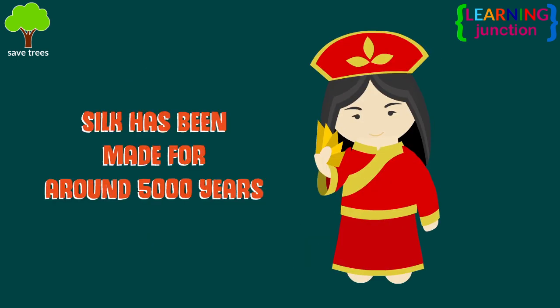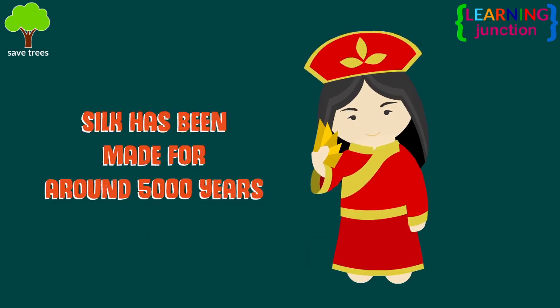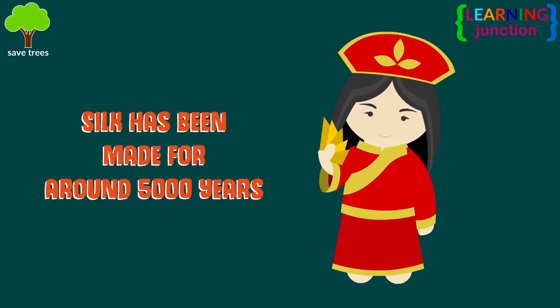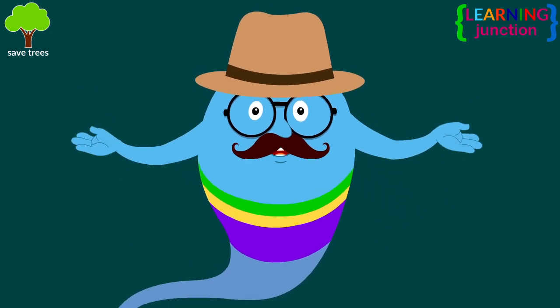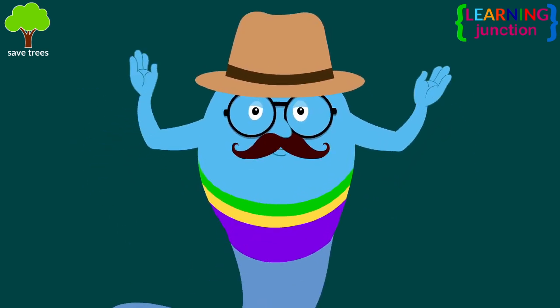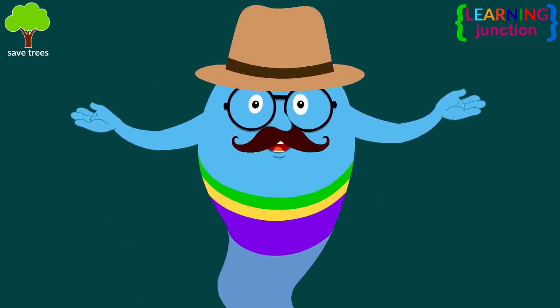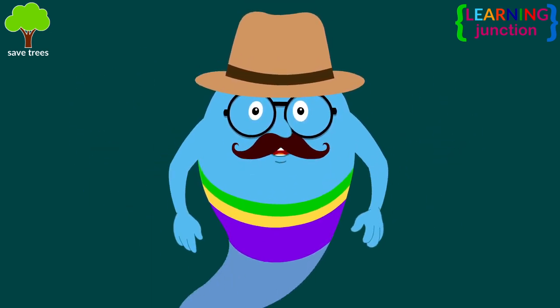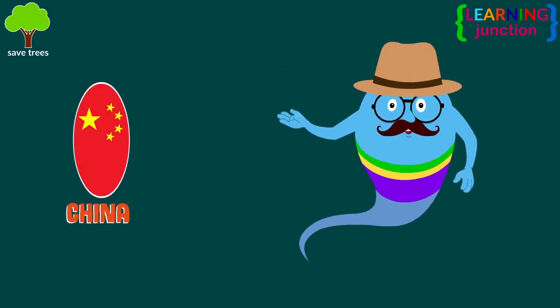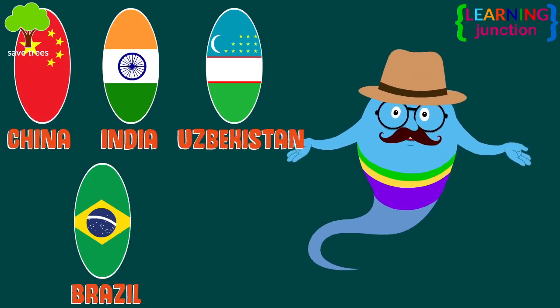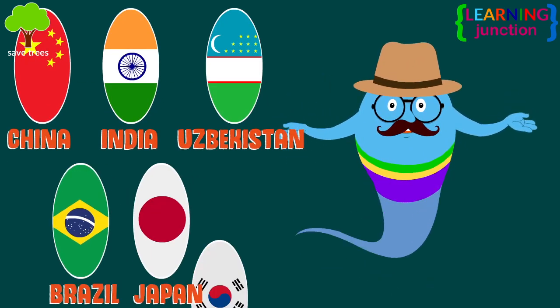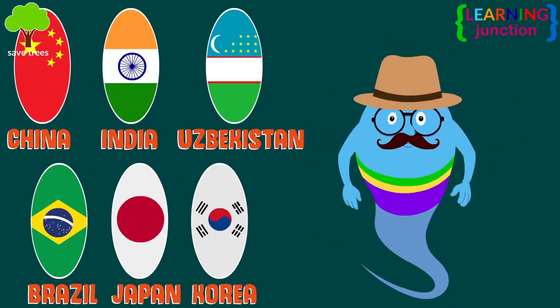Silk has been made for around 5,000 years in China. Now, there are a number of silk-producing countries in the world, including China, India, Uzbekistan, Brazil, Japan, and Korea.